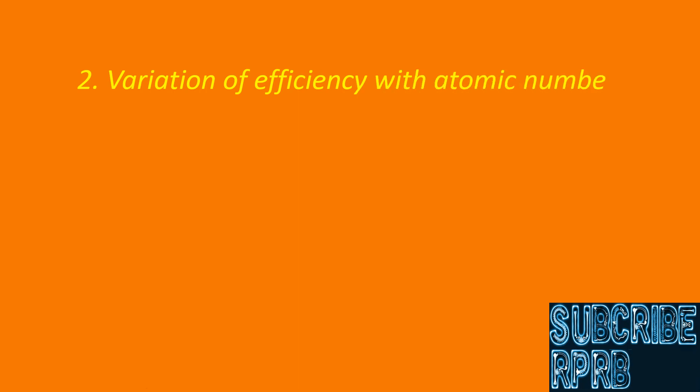Variation of efficiency with atomic number. From the above equation, we can say efficiency is directly proportional to atomic number. So targets made up of high atomic number materials are more efficient in producing X-rays than targets of low atomic number material. Tungsten, with atomic number Z equals 74, is commonly used as an X-ray target and is more efficient than molybdenum, Z equals 42. Molybdenum is used in mammography X-ray tubes as a target.